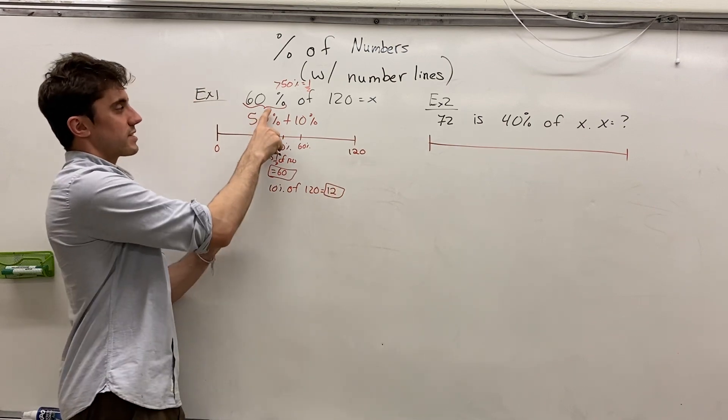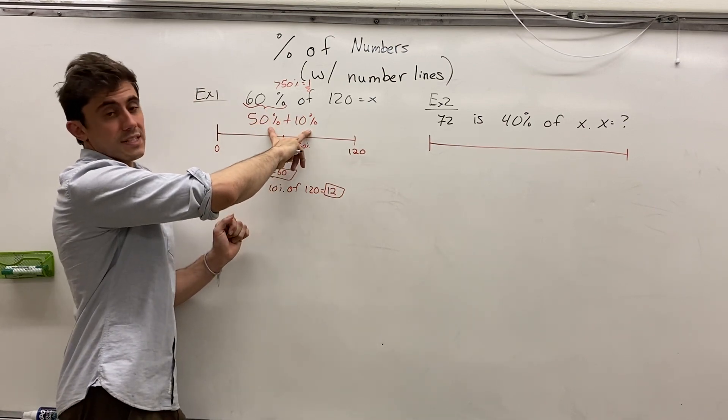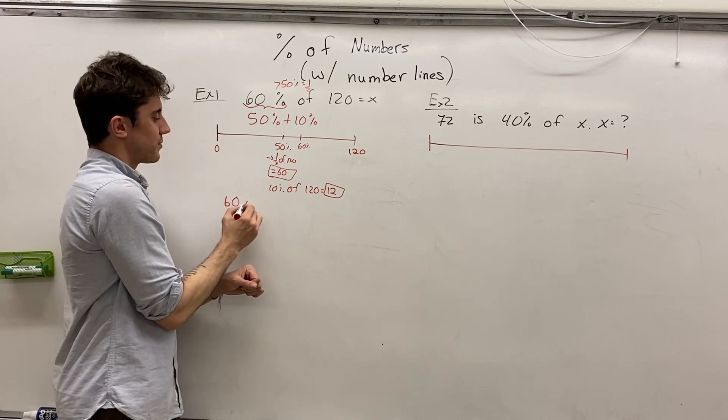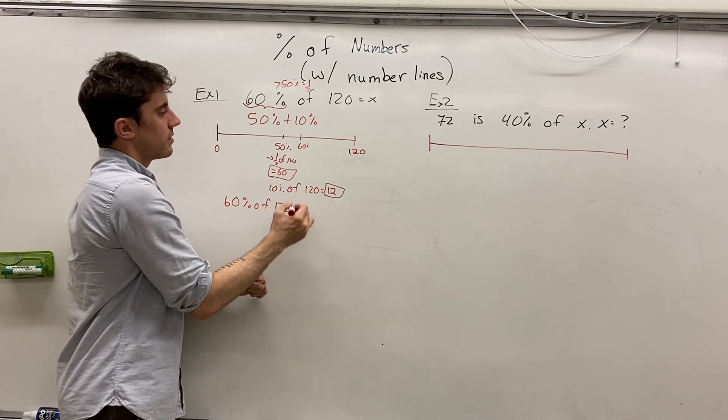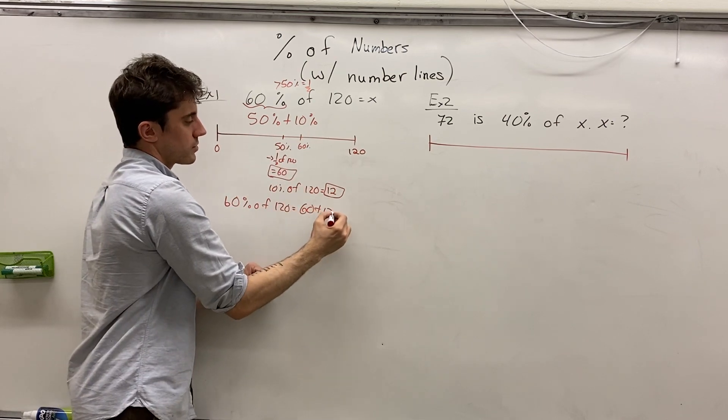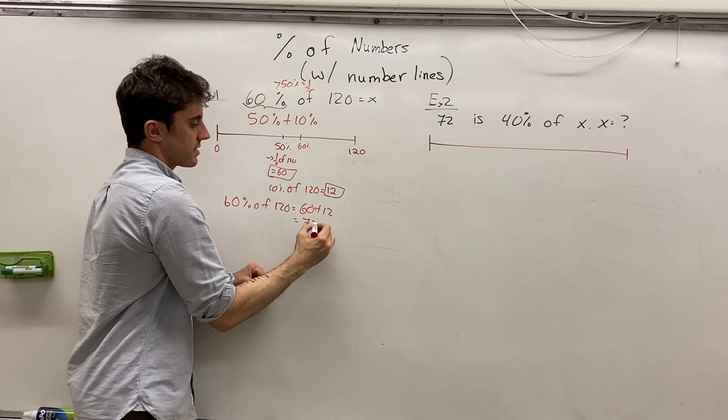And so if 60% is the sum of 50% plus the 10%, then 60% of 120 is simply 60 plus 12, which is equal to 72.